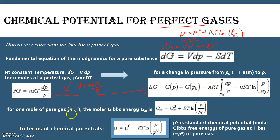For one mole of pure gas (n = 1), the molar Gibbs free energy Gm is given by Gm = Gm° + RT ln(P/P°). In terms of chemical potential, we substitute Gm → μ and Gm° → μ°, giving μ = μ° + RT ln(P/P°), where μ° is the standard chemical potential or molar Gibbs free energy of pure gas at one bar pressure.